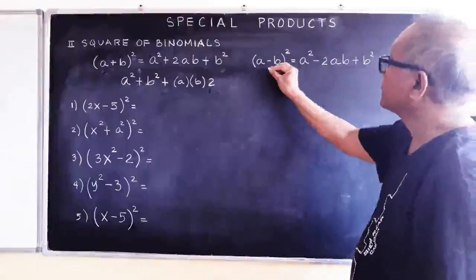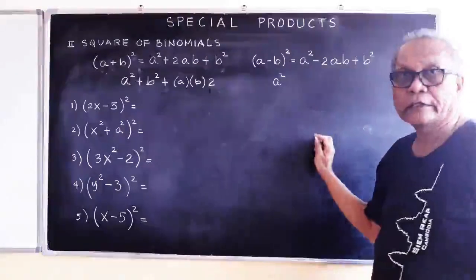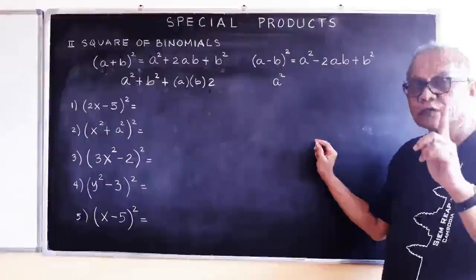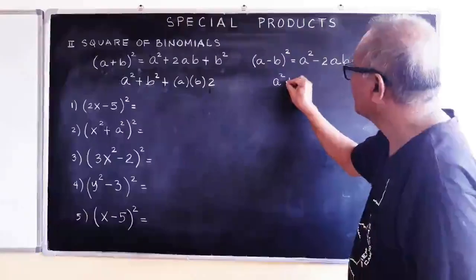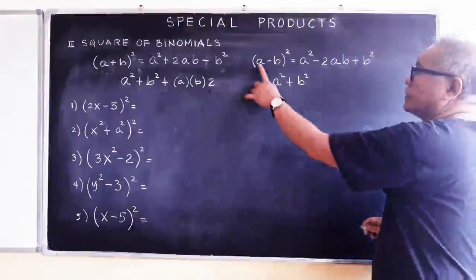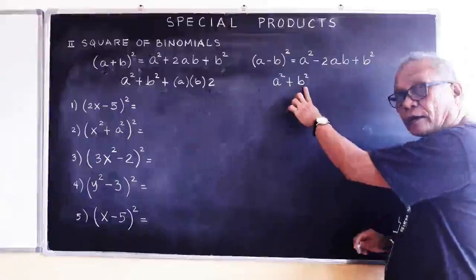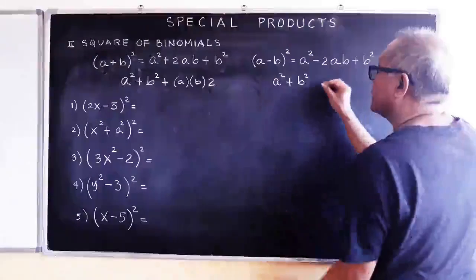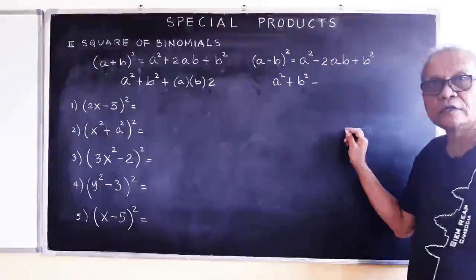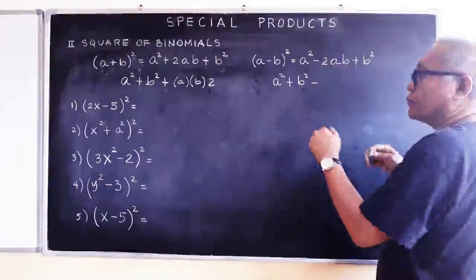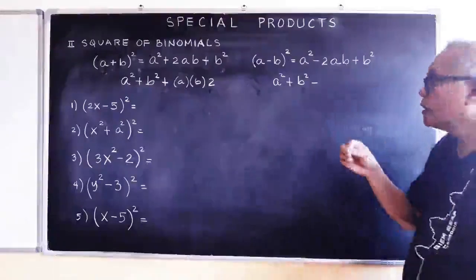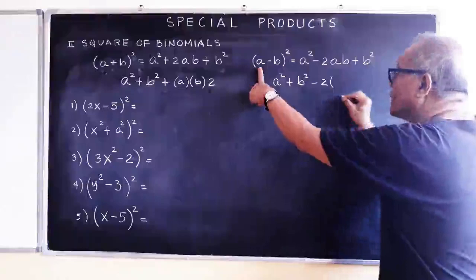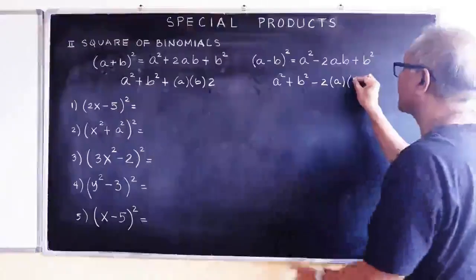We square the a — a is squared. We square the b — because negative times negative is positive, we have b squared also. And then positive here times negative here is negative. We know we need to have 2, so we have 2 times the first term times the second term.